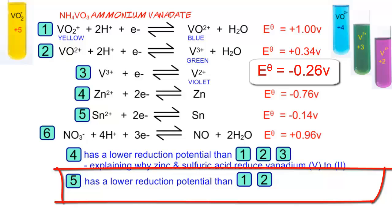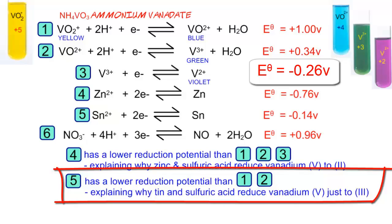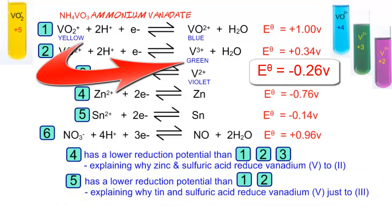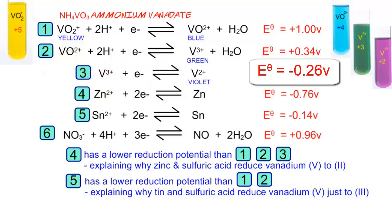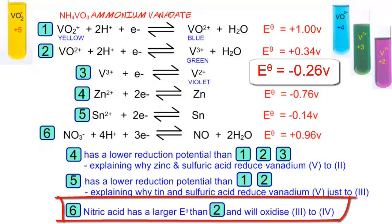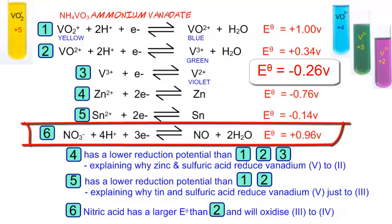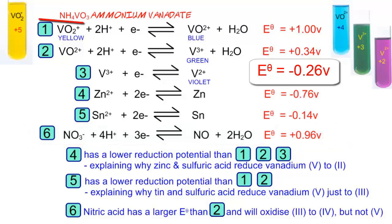Next, let's look at the use of tin — half-equation number 5. You can see that 5 has a lower reduction potential than 1 and 2, but not 3. So this explains why tin with sulfuric acid will reduce vanadium-5 down to vanadium-3 (from yellow to blue and then to green), but will not reduce it to the plus-2 violet state. And what about nitric acid on its own? Half-equation number 6 has an E-theta value of plus 0.96 volts. Nitric acid has a larger reduction potential than both 2 and 3, which explains why it will oxidize plus 2 to plus 3, or plus 3 to plus 4, but not plus 4 to plus 5.